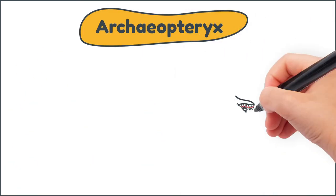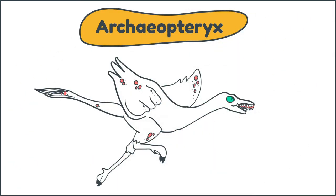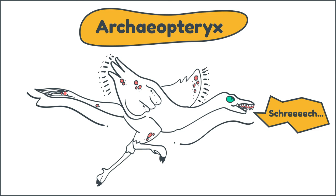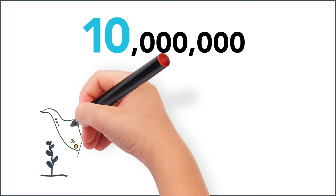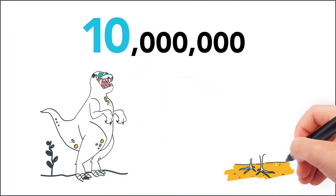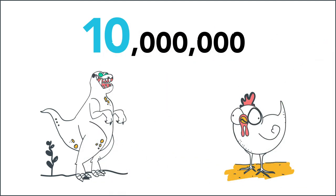There are also creatures called Archaeopteryx, who are half dino, half birds. They had long tails and feathers. It took them 10 million years to go from 100 to 500-pound dinosaurs to tiny birds that go chirp.